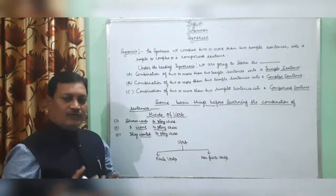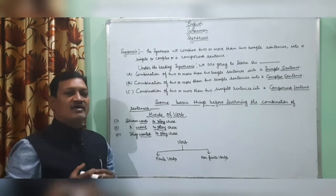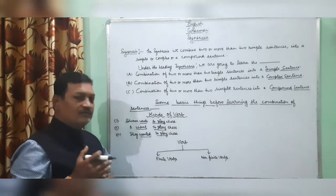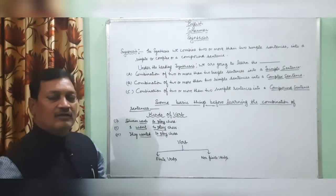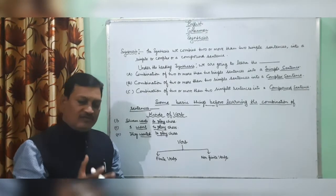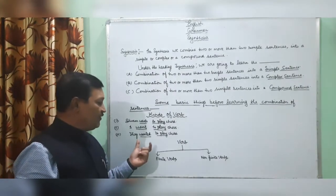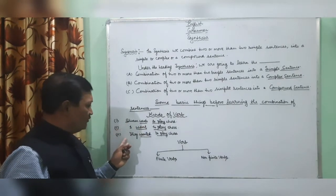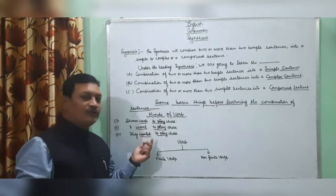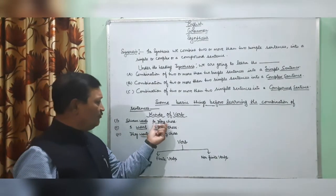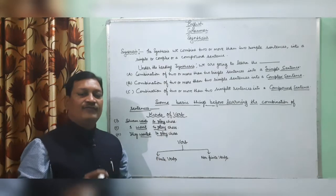That's why, dear students, we come to the conclusion that there are two types of verbs. The verb which changes according to the subject, person, number, and tense is called a finite verb. So from the first to the third sentence, 'wants', 'want', and 'wanted' are finite verbs. The other verb 'to play', which remains the same from first to last, is a non-finite verb.